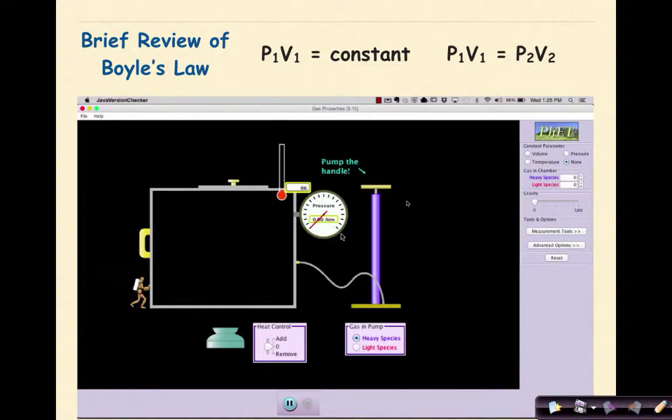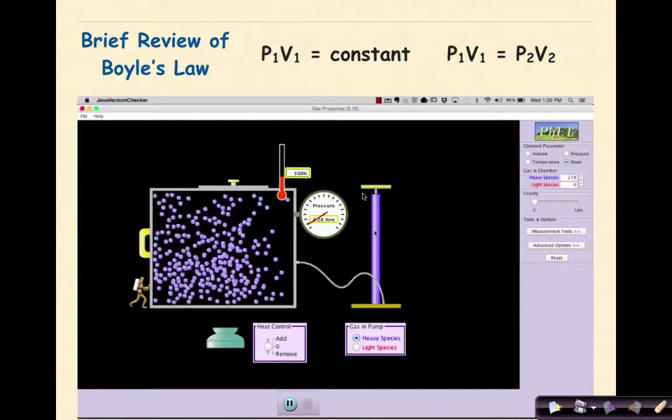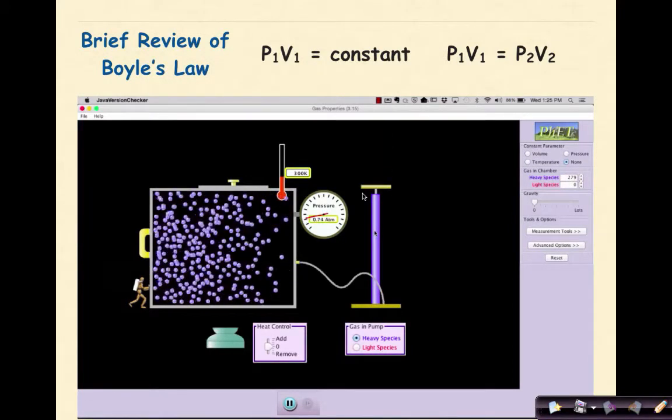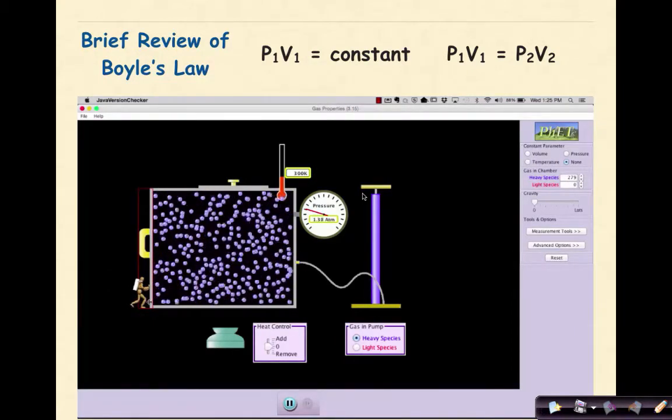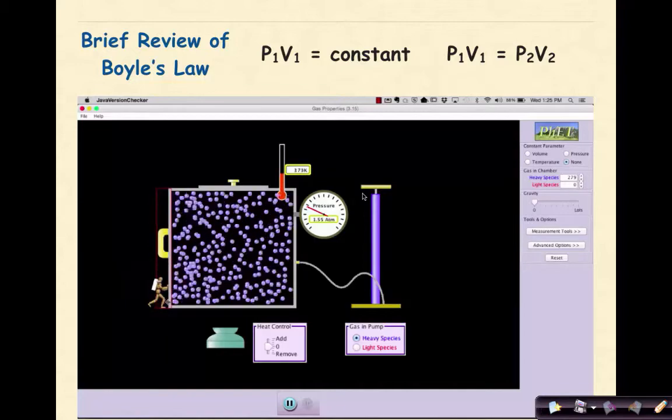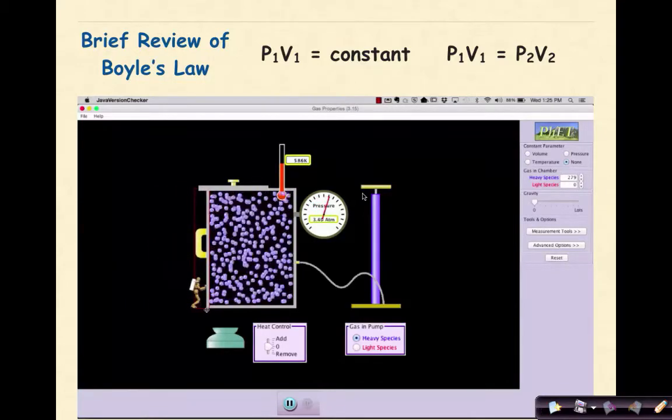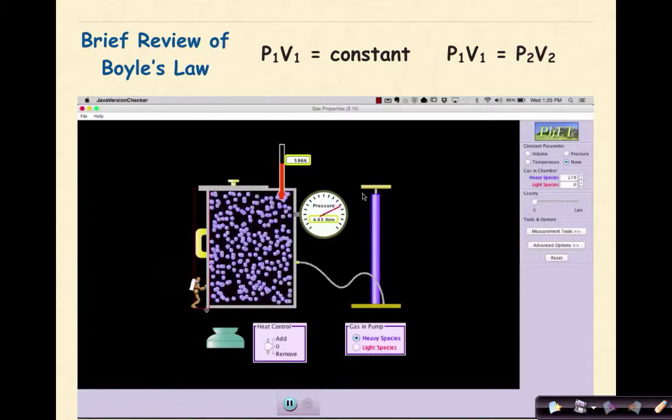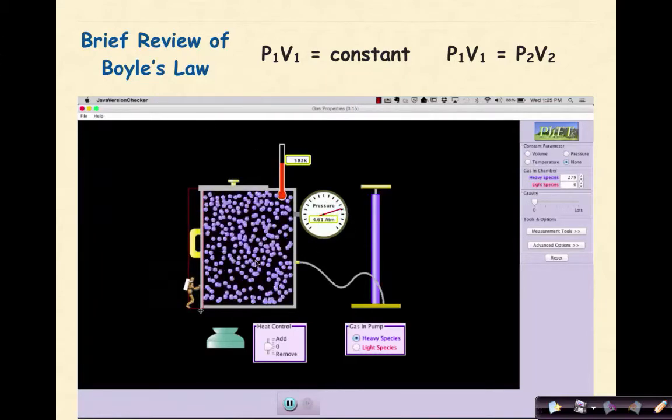Now let's look at this PhET simulation to see the relationship between pressure and volume. First, we'll add a certain number of molecules to this gas chamber. Once our pressure settles out at around 137 atmospheres, we'll decrease the volume. When we decrease the volume, we see that pressure is increasing. So pressure increases as volume decreases.